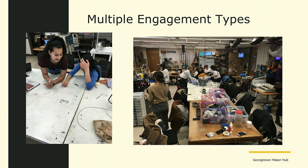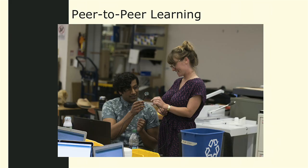Through building these spaces and thinking about how we want to support new models for research and design, we've come up with a handful of engagement types that have really worked for us. Number one, at the core of what we do and what we found very scalable, is supporting drop-in peer-to-peer learning. We're open four to five hours a day, six days a week, and during that time anybody in the Georgetown community can walk in and get busy right away learning how to turn their ideas into reality.